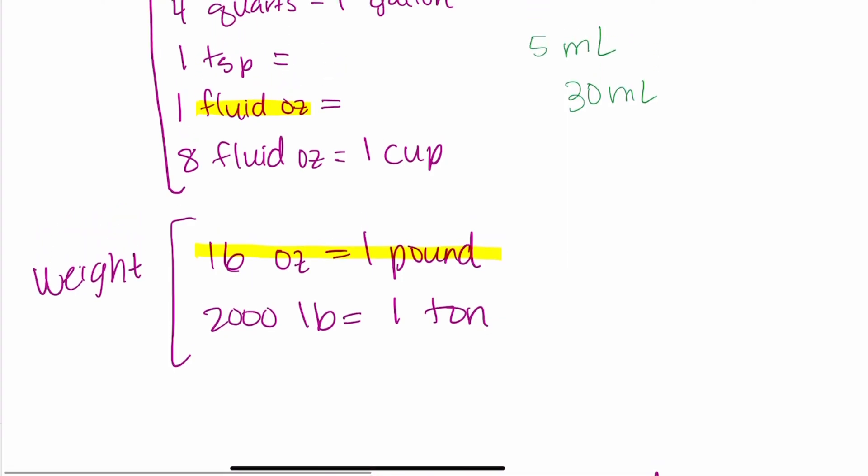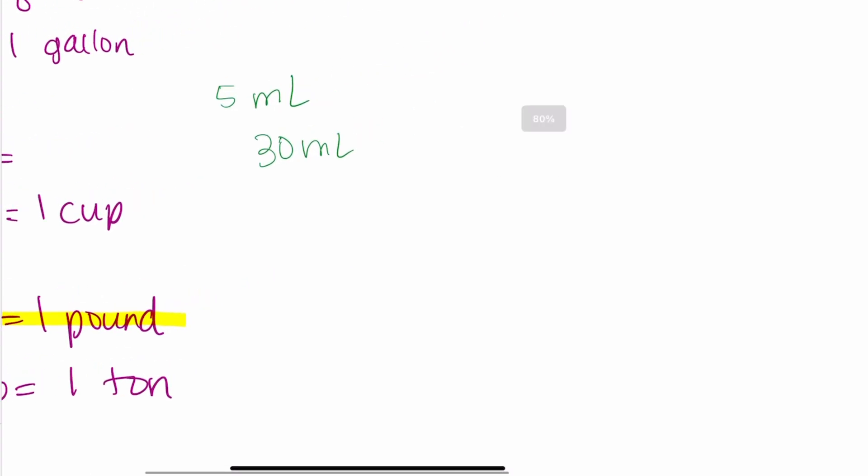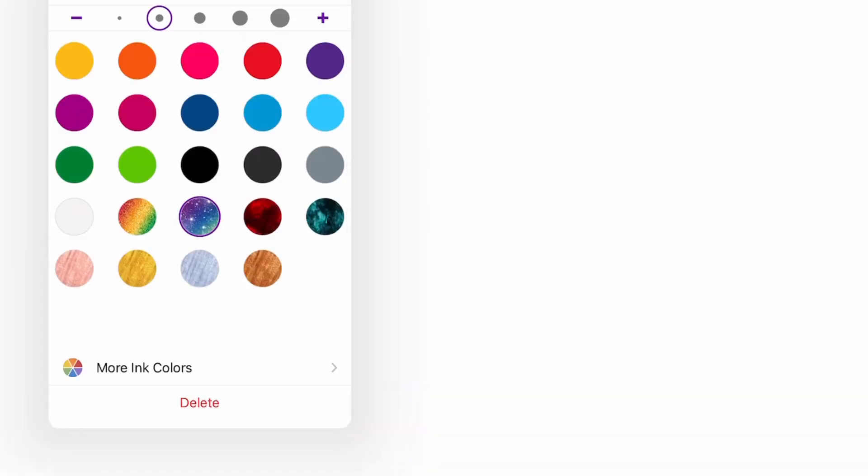Now before we move on, I do want to talk about one more thing in terms of metric measurements. With metric measurements, there are often prefixes that you're going to see. And these prefixes are important to know. So I'll walk through these really quickly over here. I'm going to choose a different color and we'll just walk through them together. So I'll choose like this little sparkly pen to make it a little bit more fun.